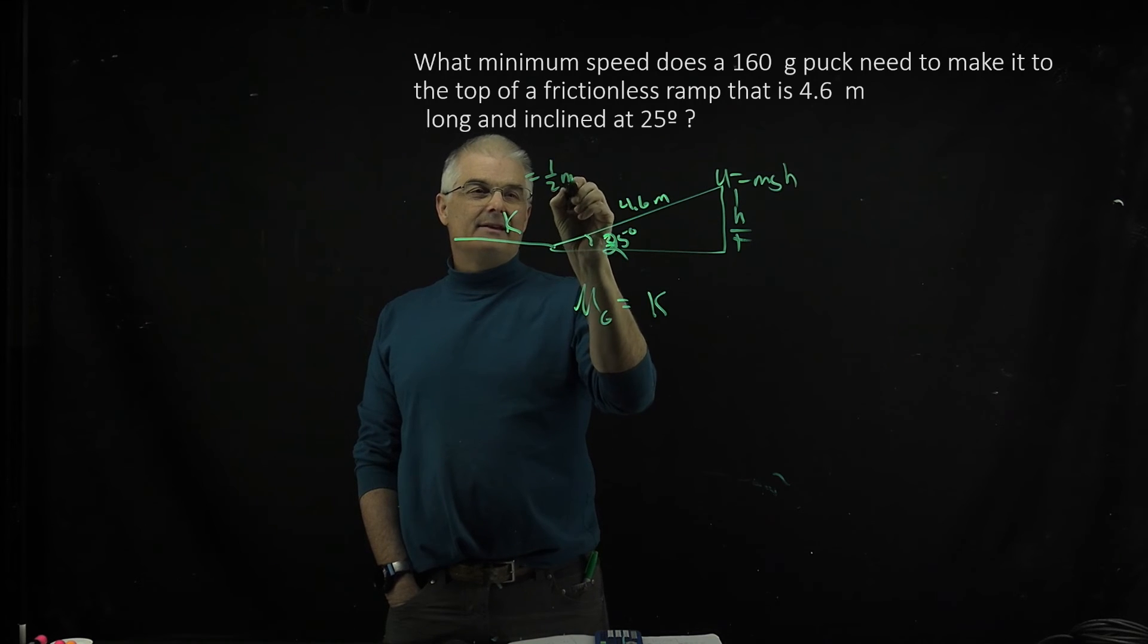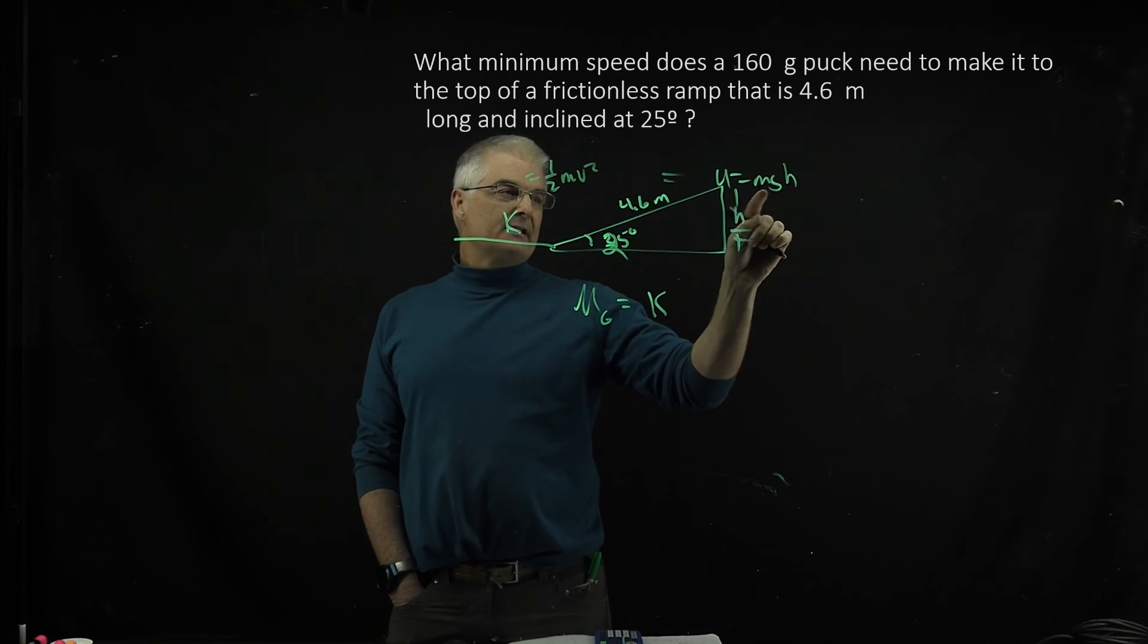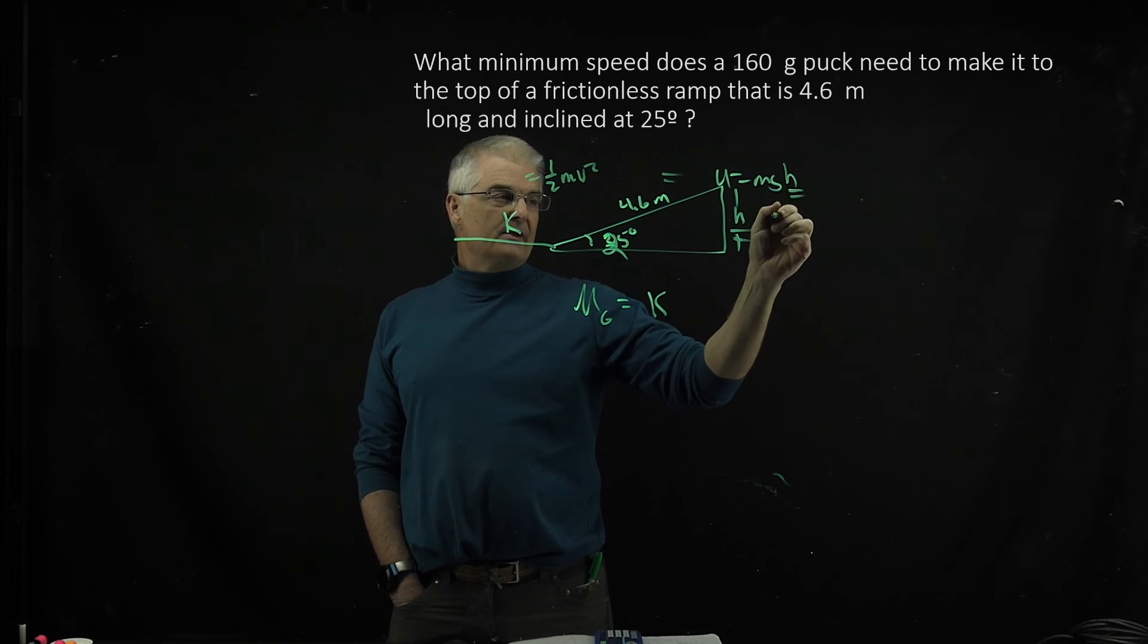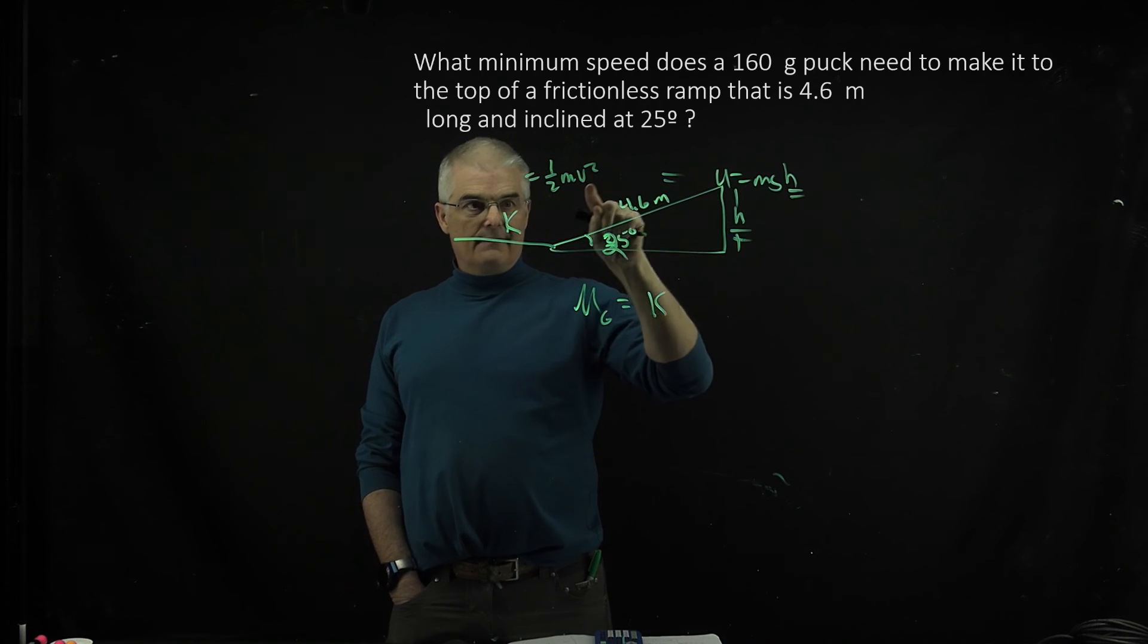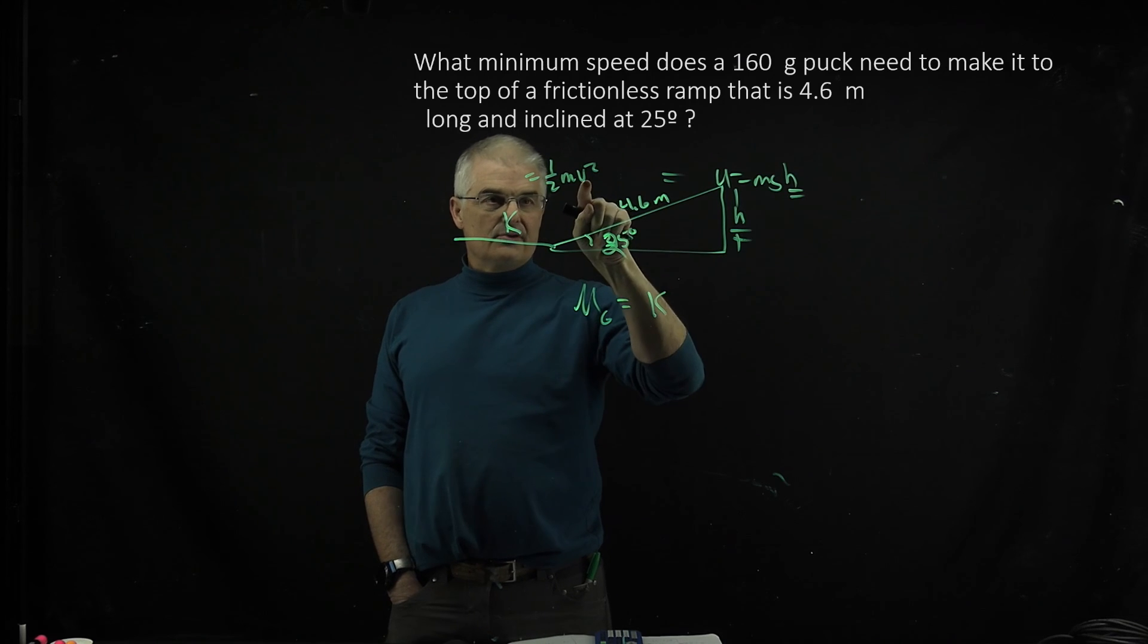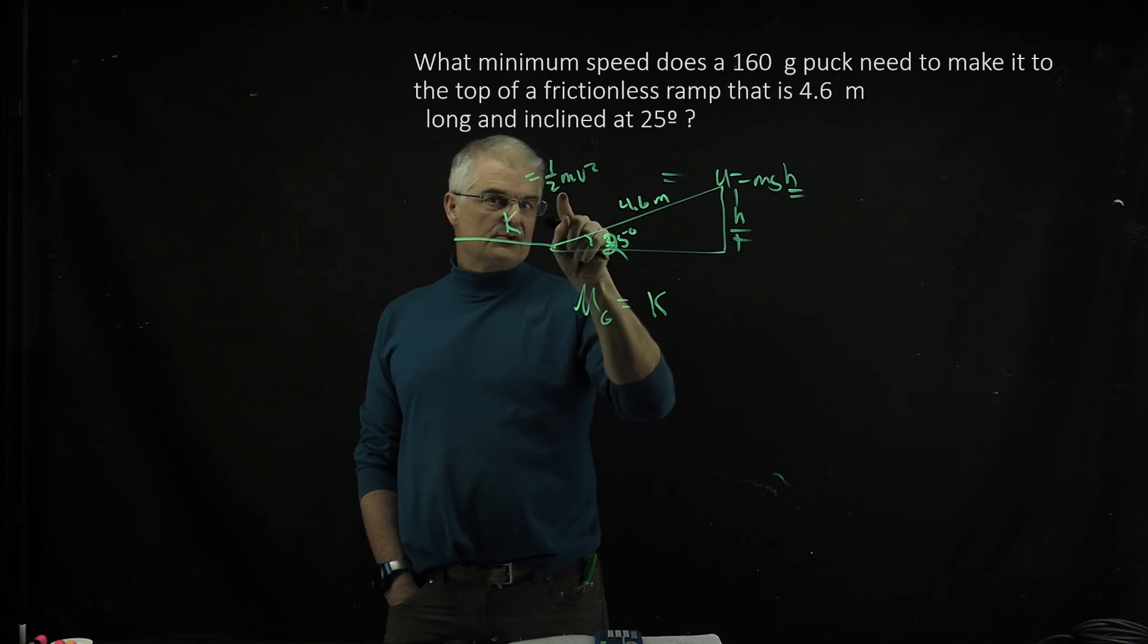This is 1 half mv squared. You're going to set that equal to mgh. You're solving for v. You have to use the h you find here. You're going to solve for this v. The m's will cancel.